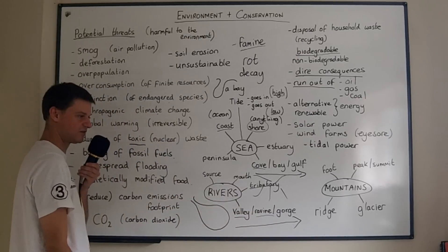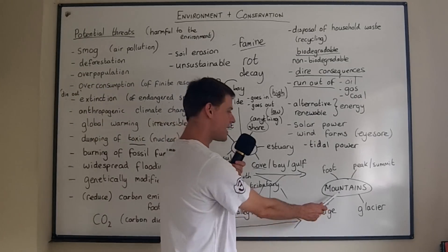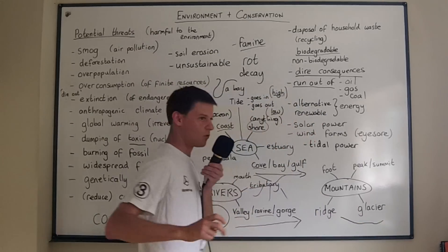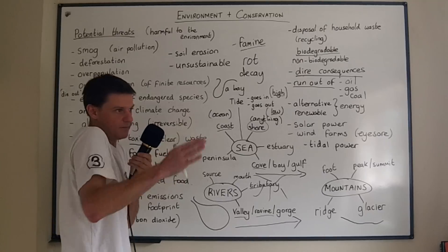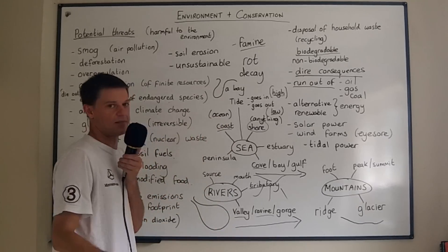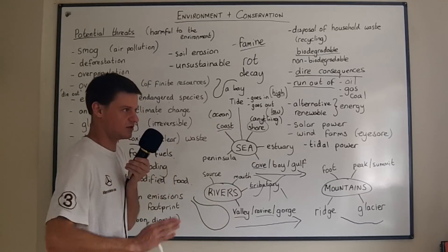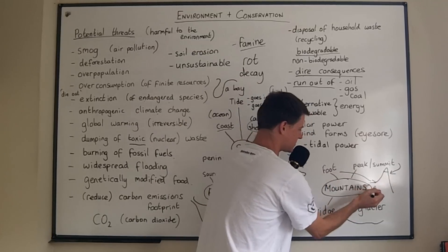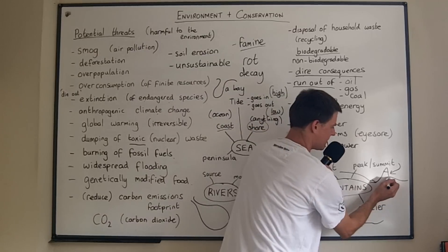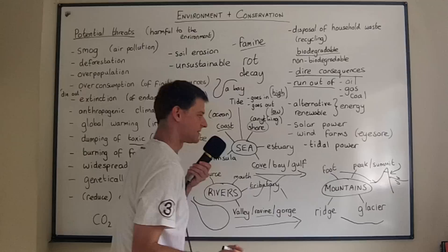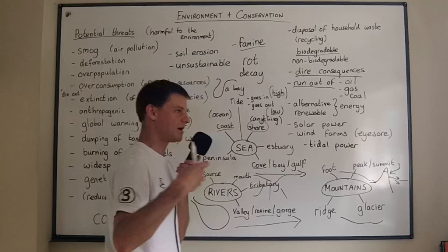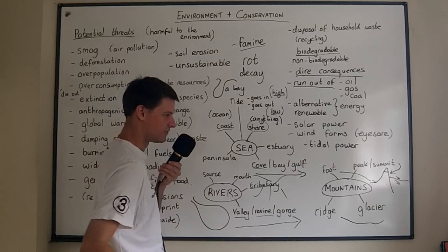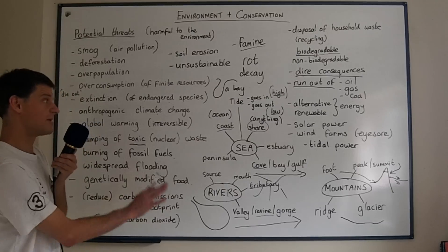Lastly, mountains. A mountain ridge is the high point where you have two sharp edges dropping down on each side — it's different from a peak or summit, which is simply the top of the mountain. The foot is the bottom of the mountain. A glacier is a type of mountain where ice sits at the top and melts, and it's very often the source of a river.